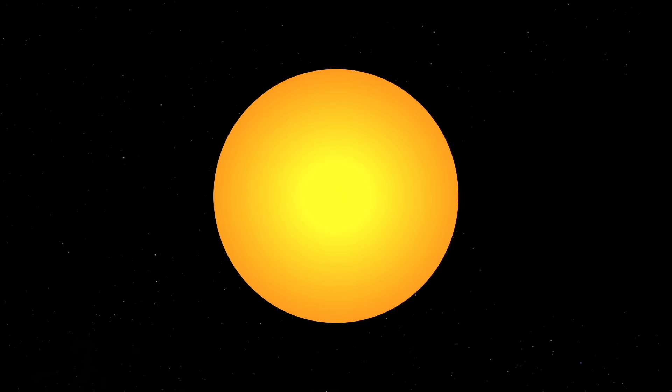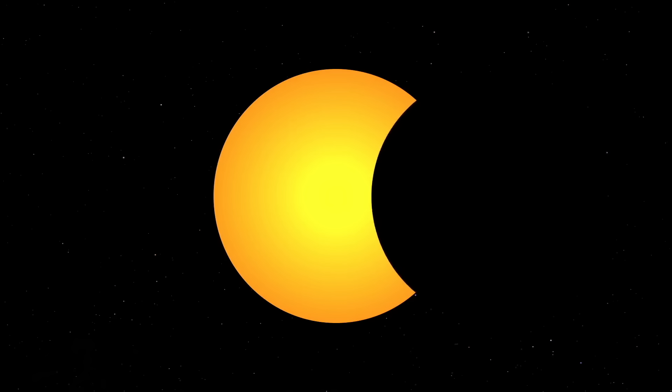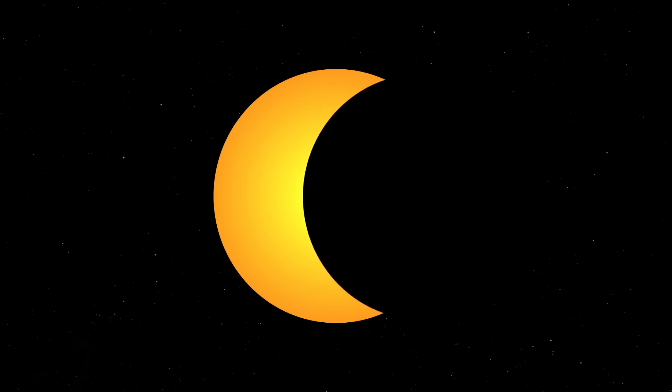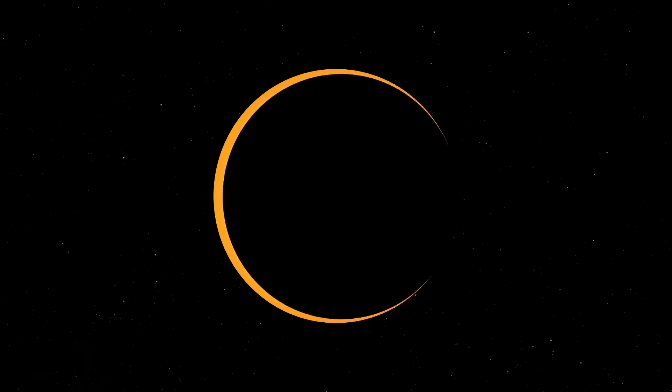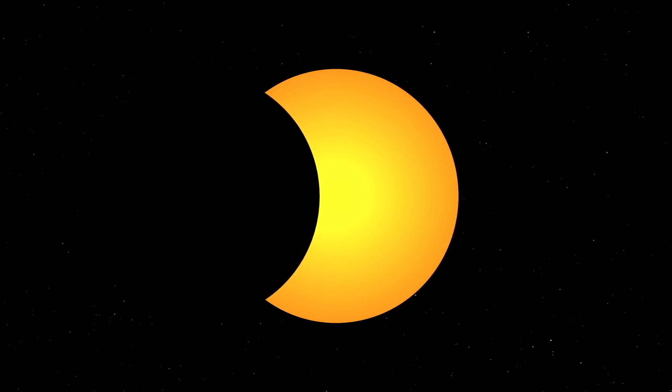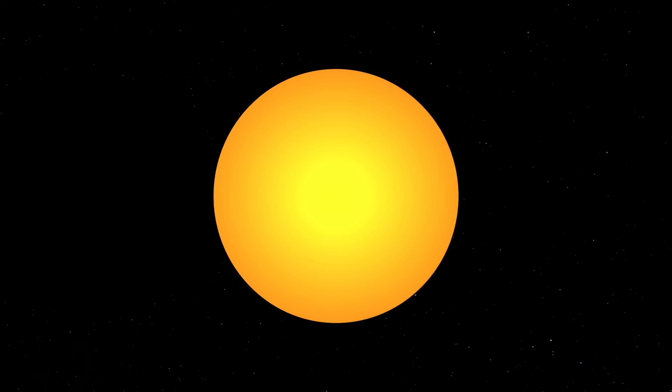Likewise, during an annular eclipse, some of the sun's surface is always exposed. Even if you're on the center line, like you see here, you cannot view this eclipse with the naked eye. You must use some form of filtering or projection.